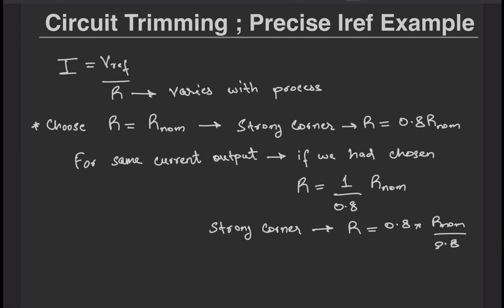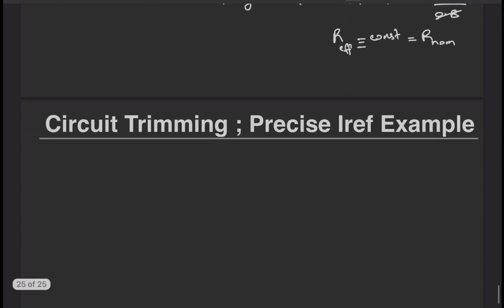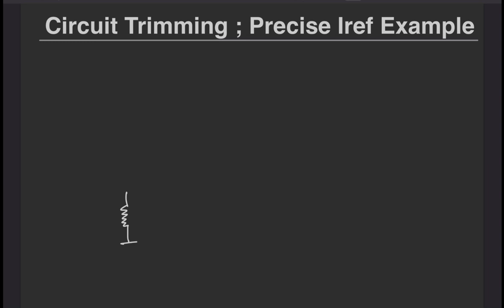Let's see how we can achieve this. Suppose you have a series of resistors connected with switches in parallel. Now R can be tuned between Rmin to Rmin plus 7 times Rb in this example.